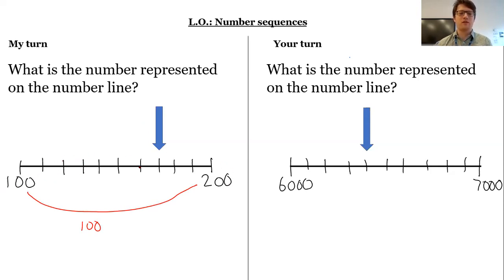And then how many gaps are there in between 100 and 200? There's one, two, three, four, five, six, seven, eight, nine, ten. And because the gaps are equal, I could do 100 divided by 10 to get me the value of each of these gaps. 100 divided by 10 is 10. So that means that each of these gaps is worth 10.